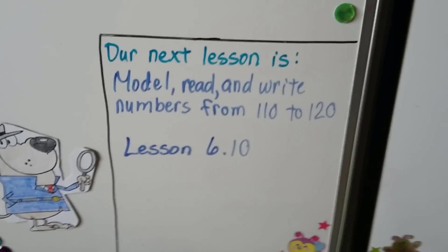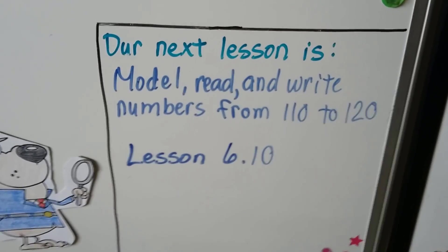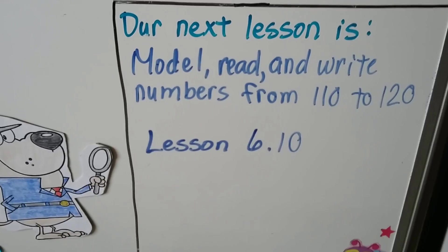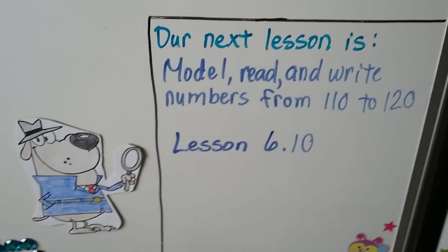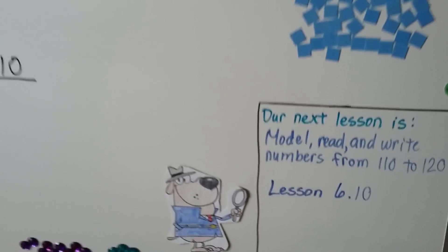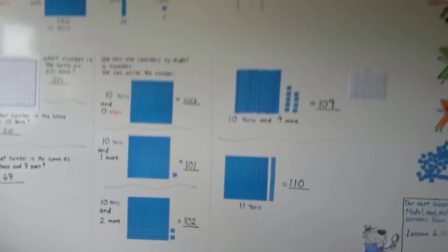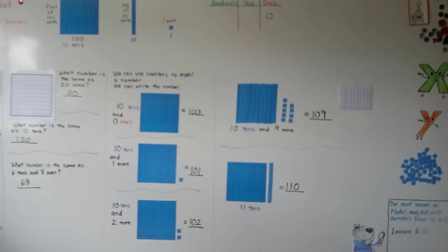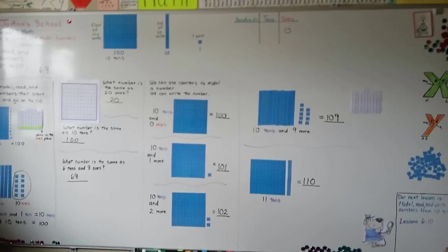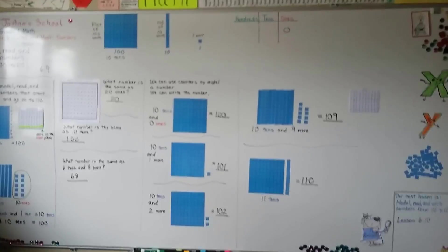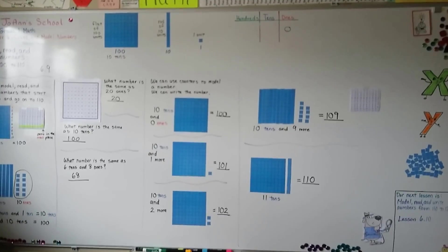Our next lesson is model, read, and write numbers from one hundred ten to one hundred twenty. That's lesson 6.10, and that's the last lesson for chapter six. Then we're going to go on to chapter seven and compare numbers. I hope you're having a great day. I'll see you next time. Bye.